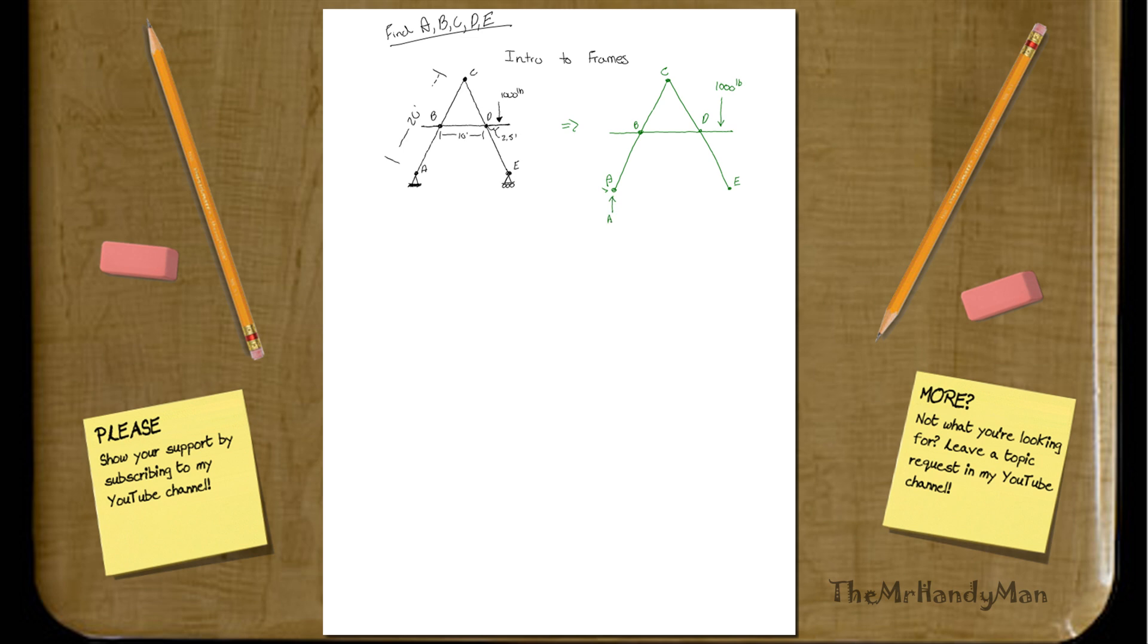You're going to have an A_Y and an A_X component, and you also have an E_Y, and that's it. To solve for this, first of all, we need to measure the distances of this thousand pound force.